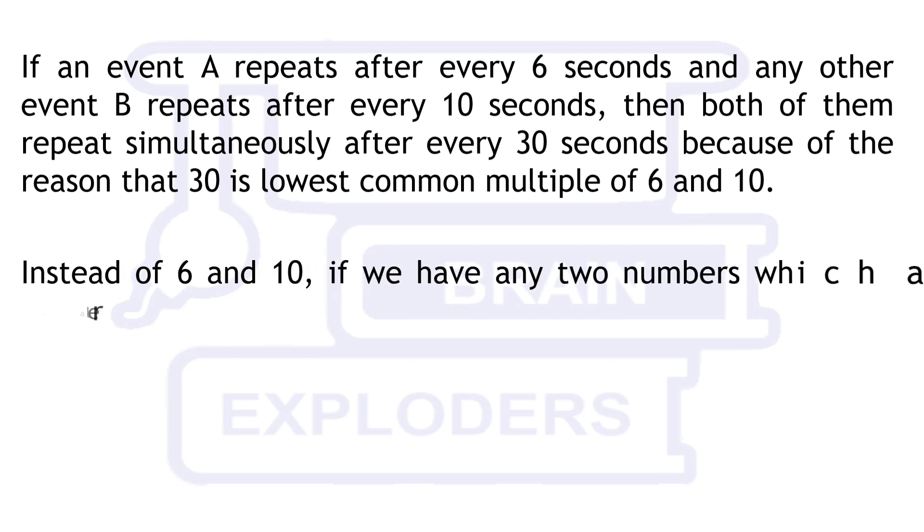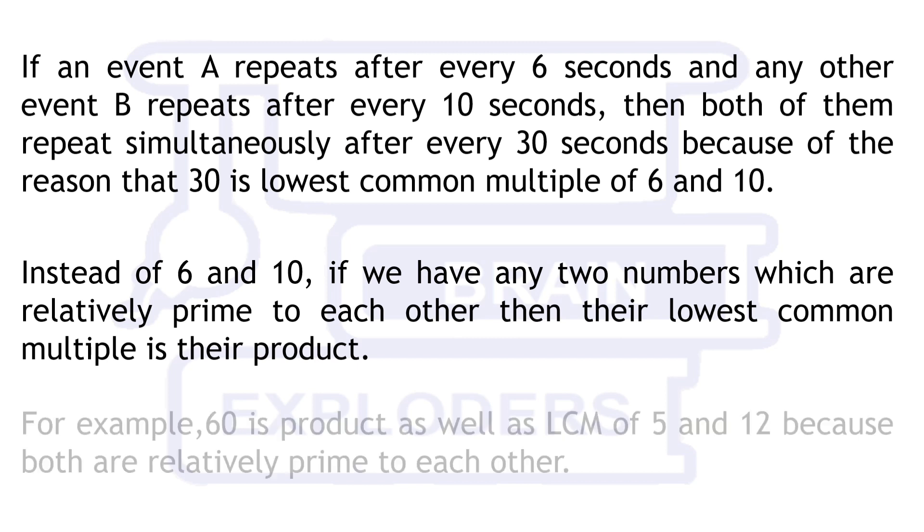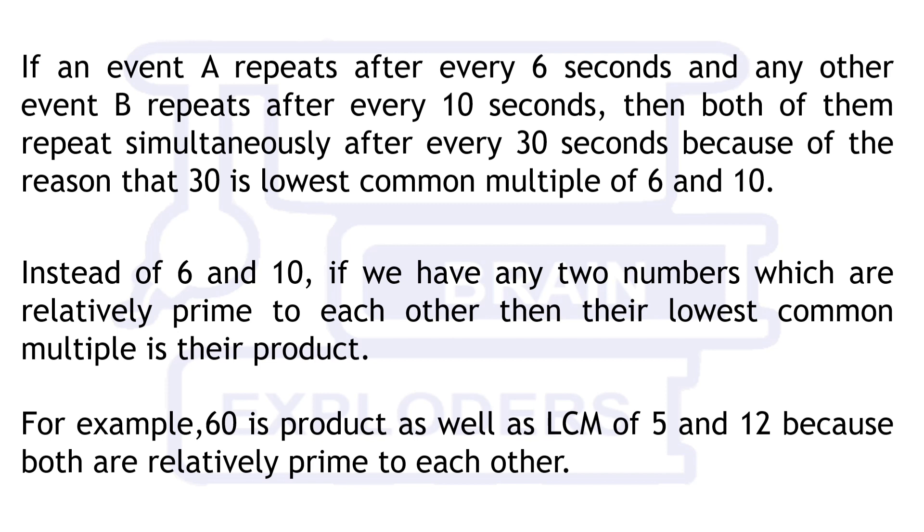Instead of 6 and 10, if we have any two numbers which are relatively prime to each other, then their lowest common multiple is their product. For example, 60 is the product as well as LCM of 5 and 12 because both are relatively prime to each other.